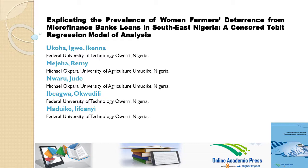This article is written by five authors. First author: Yukoa Gwag Aikna. Second author: Maja Rimi. Third author: Nwaru Jude. Fourth author: Ibiagwa Akwadili. Last author: Maduike Ifeni.